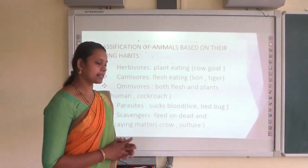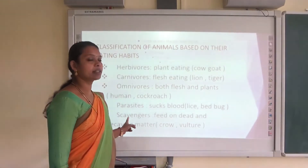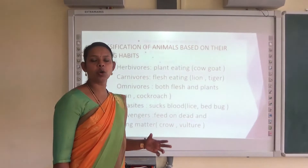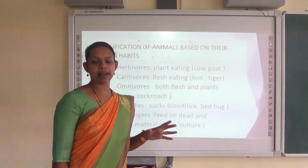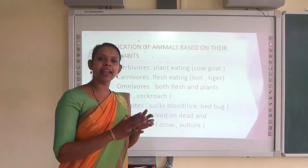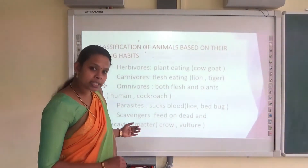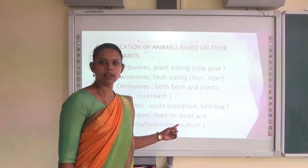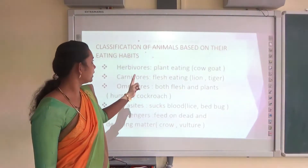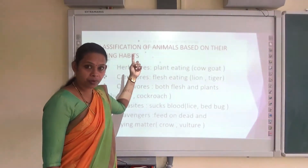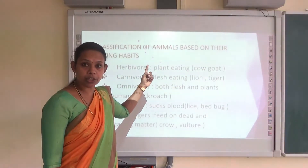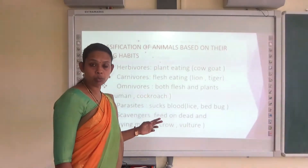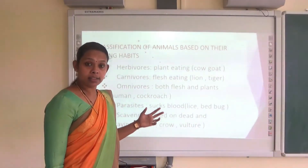They are known as parasites. And the last category is scavengers, which feed on dead and decaying matter and it helps us to clean our surroundings — that is why they are known as scavengers. Examples are crow and vultures. So based on the food they are eating, animals are grouped into five different categories: carnivores, herbivores, omnivores, parasites and scavengers.